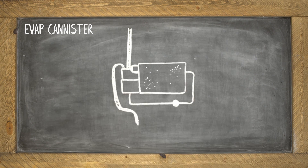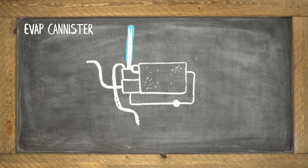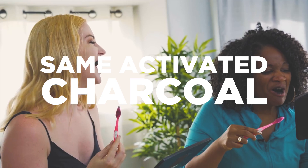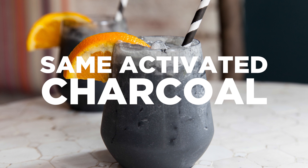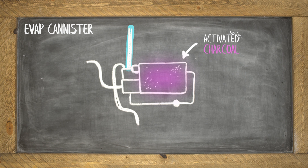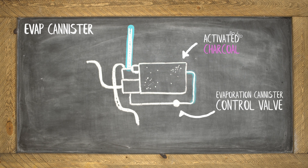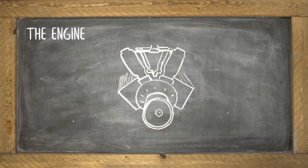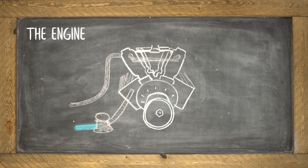The canister has something called activated charcoal, which acts as a sponge to store the fuel vapors. At the right time, the EVAP canister purge valve opens and uses the vacuum from the engine to draw just the right amount of fuel vapors out of the charcoal and into the intake manifold.